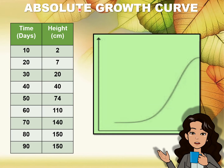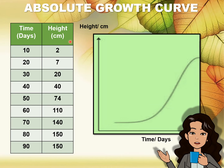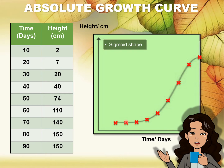We'll start by plotting the absolute growth curve. To plot this curve, we first label our axes. The x-axis will be time — in this example, days, but there are experiments where the time could be hours or even years. The y-axis will be the parameter of measurement; in this example, we are using height. Other experiments may use mass or length. After that, we just have to transfer the points from the table to the graph paper and then connect the points to get the absolute growth curve.